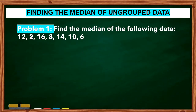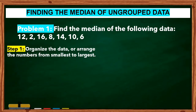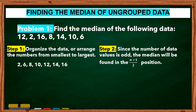Problem 1: Find the median of the following data: 12, 2, 16, 8, 14, 10, and 6. Step 1: Organize the data from smallest to largest: 2, 6, 8, 10, 12, 14, and 16. Step 2: Since the number of data values is odd, the median will be found in the (n + 1) / 2 position. So, (7 + 1) / 2 = 8 / 2 = 4. Since it is in the fourth position, the median is the value found in the fourth position of the organized data.